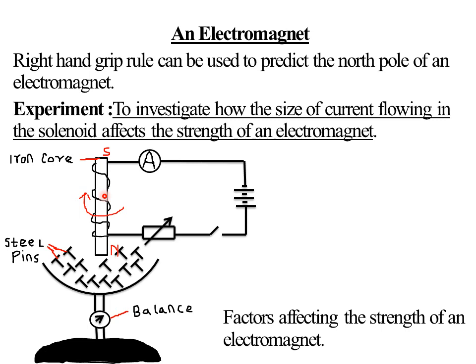The second factor affecting the strength of the electromagnet is the current flowing in the coils. The more the current, the more steel pins are attracted, meaning the stronger the electromagnet. The higher the current flowing through the coils, the stronger the electromagnet — the amount of current is directly proportional to the strength of the electromagnet.